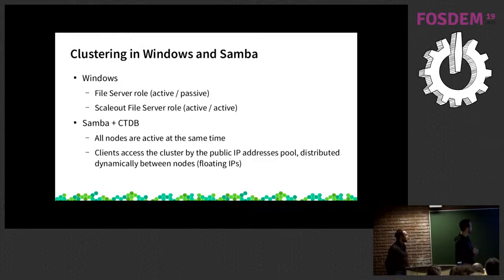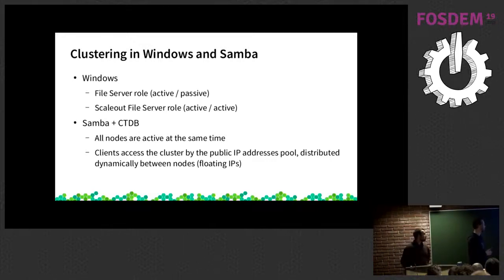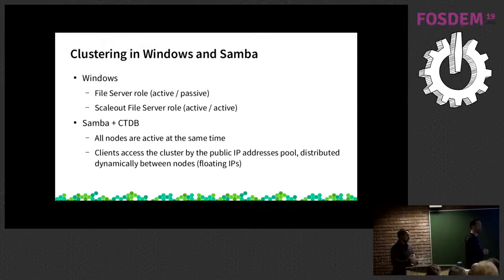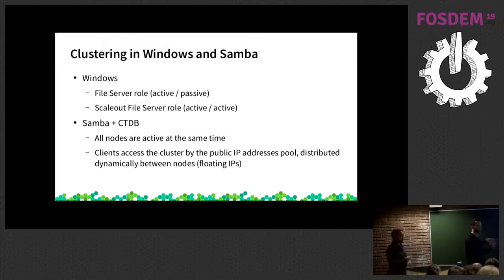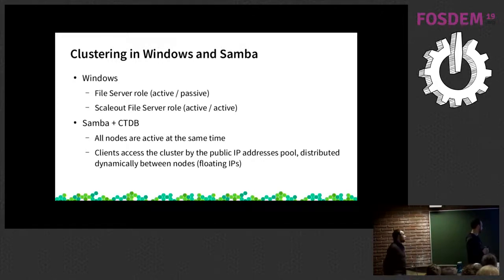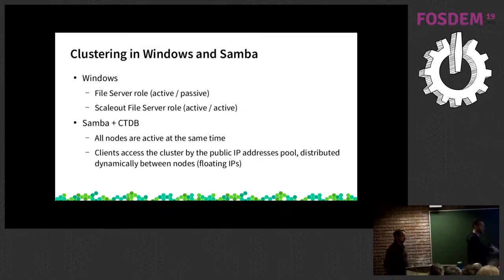This is a look at how things have changed, or are changing, with clustered SMB serving. With Windows, in the past they've had active-passive setups where they have this file server role which moves across nodes within the cluster. CTDB has always been active-active, to the point where clients are spread across those CTDB or SMB gateway nodes.